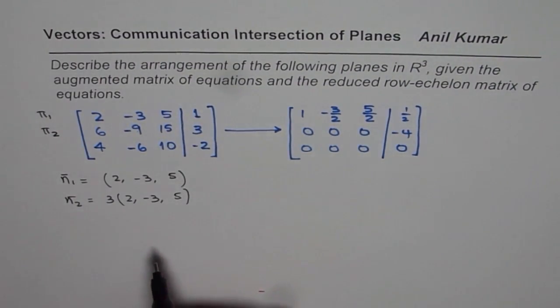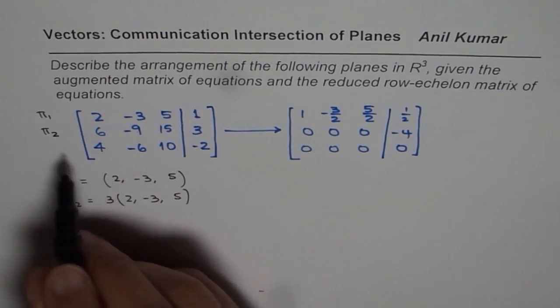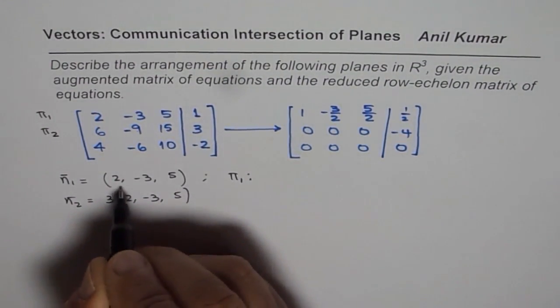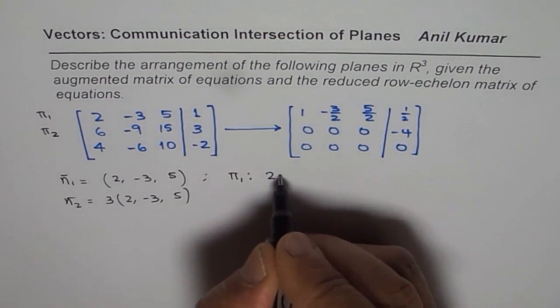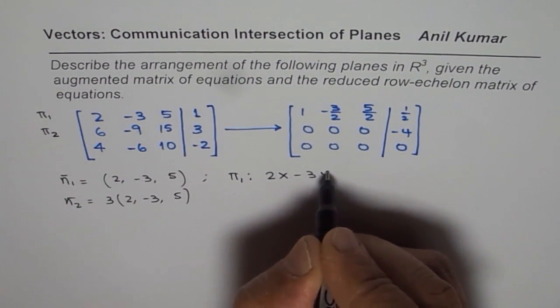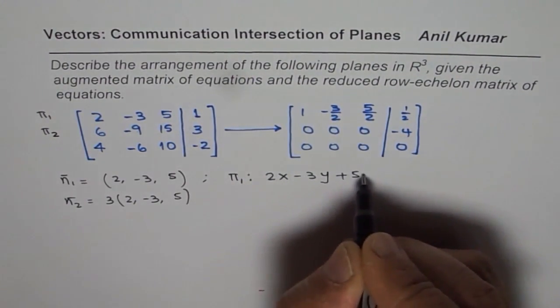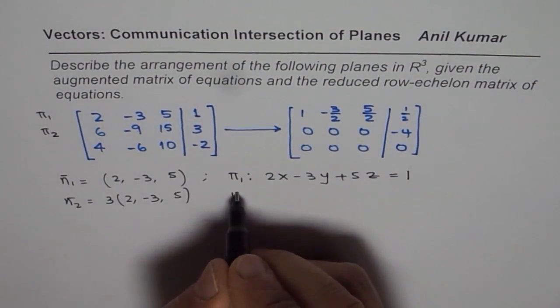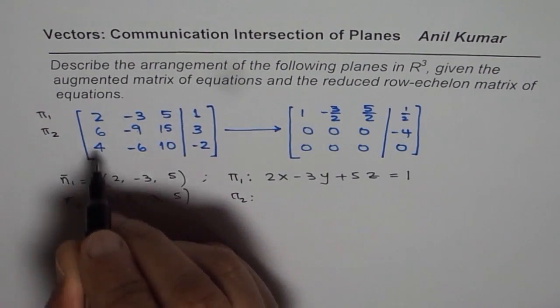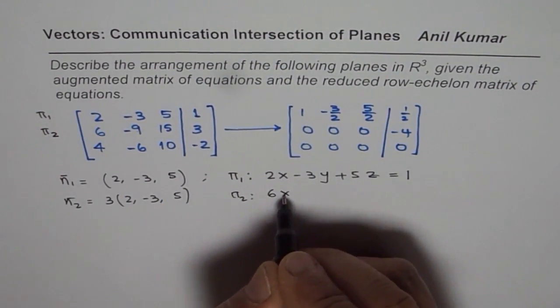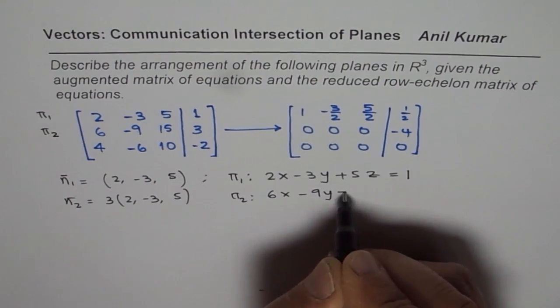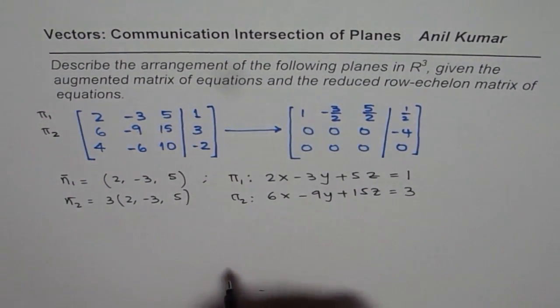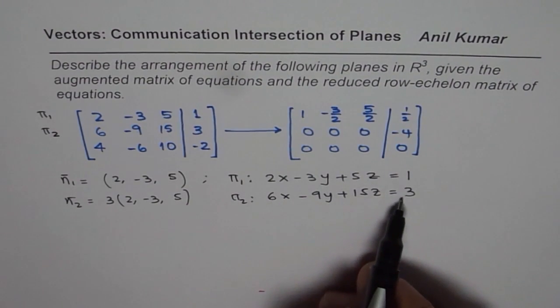If you write the equation of the plane π1 in that case π1 could be written as 2x minus 3y plus 5z equals to 1 and π2 could be written as 6x minus 9y plus 15z equals to 3.